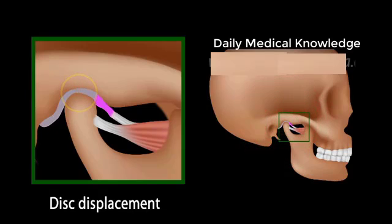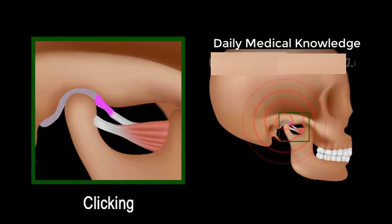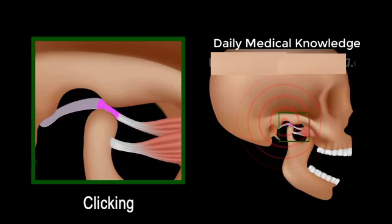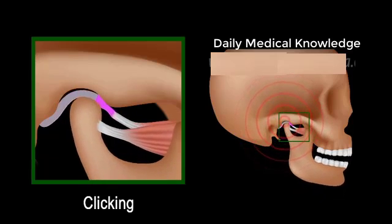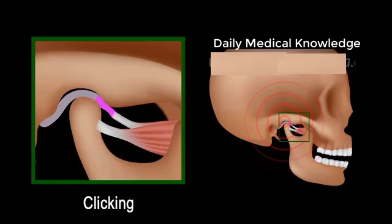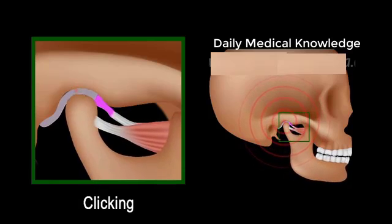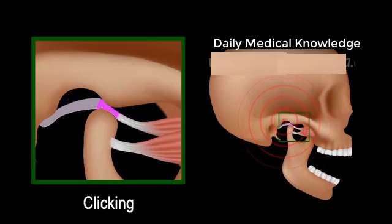The forward dislocated disc forms an obstacle for the condyle movement when the mouth is opening. In order to fully open the jaw, the condyle has to jump over the back end of the disc and onto its center. This produces a clicking or popping sound. Upon closing, the condyle slides back out of the disc, hence another click or pop.